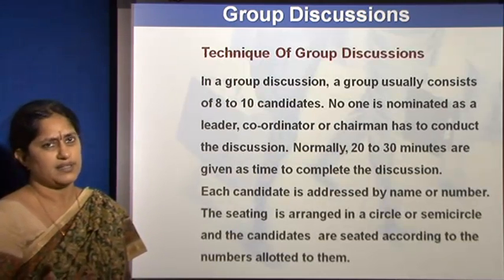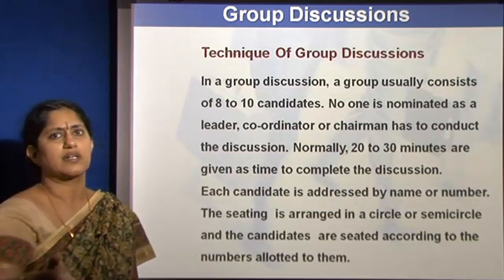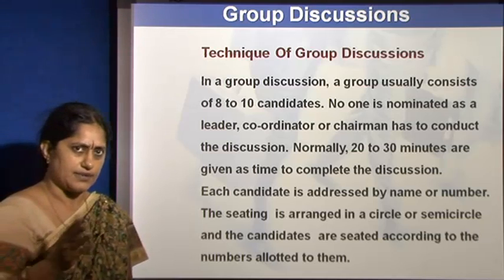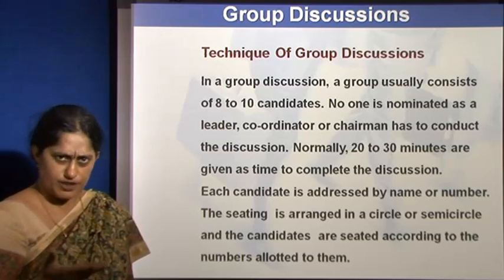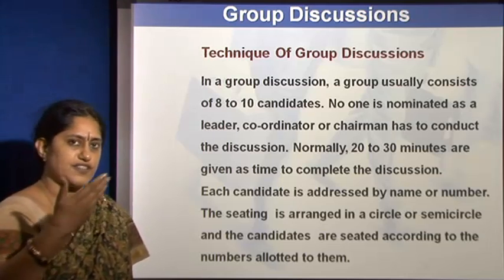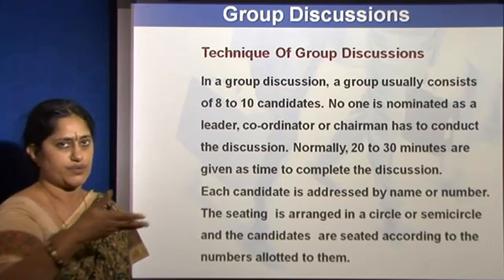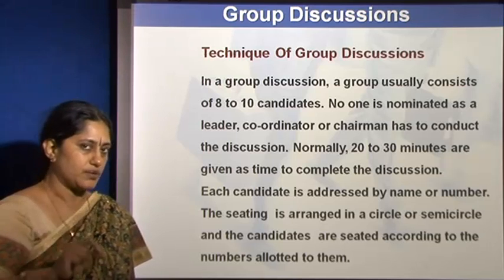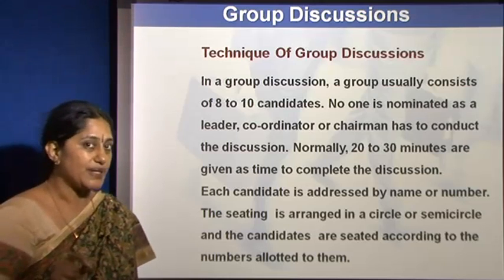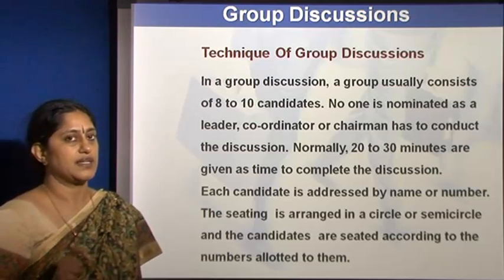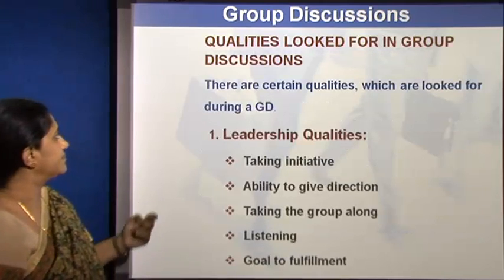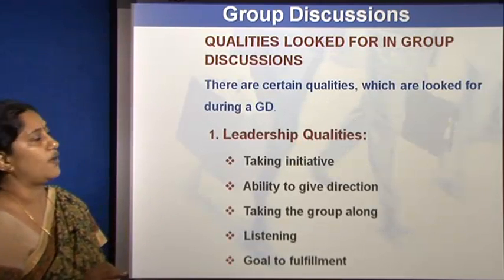Normally it's a group of eight or ten — a manageable group. They sit either in a semicircle or in a circle. There is no leader in the group. The session goes on for 10 to 30 minutes. A topic is thrown open and anybody could start. There is a facilitator who can intervene, and there may also be an external evaluator assessing how each person discusses the topic.